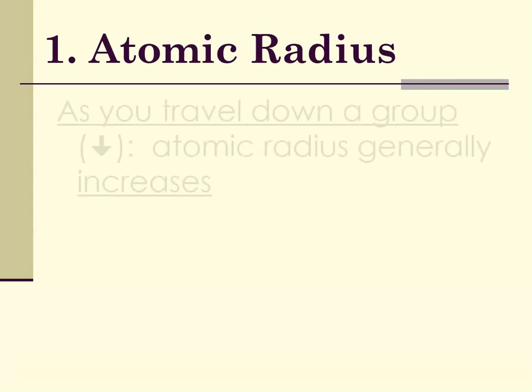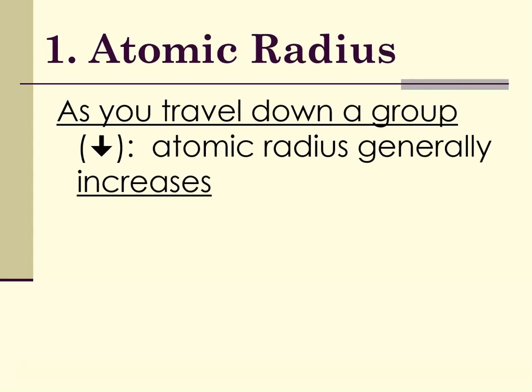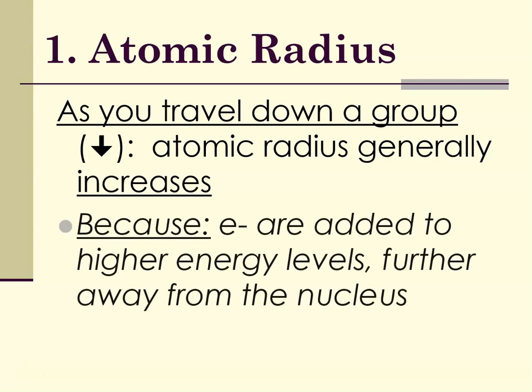So what is the trend? As you travel down a group from top to bottom within a vertical column, the atomic radius generally increases. Why? As you go from row to row in the periodic table, each time you drop down a level, you're adding another entire principal energy level. So number one, you're adding a layer, and number two, those electrons are farther away from the nucleus.